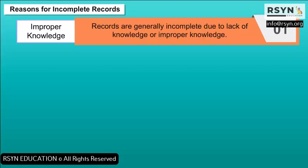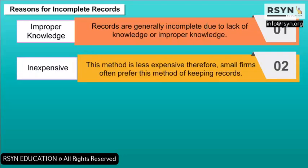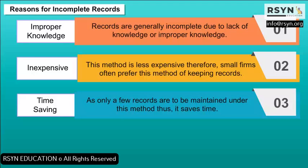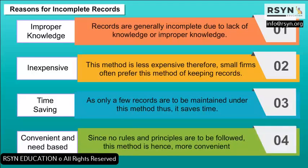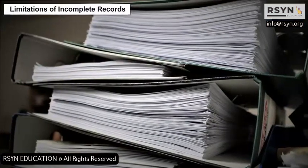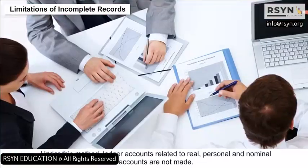Reasons for incomplete records: Improper knowledge — records are generally incomplete due to lack of or improper knowledge. This method is less expensive, therefore small firms often prefer it. Time saving — as only a few records are to be maintained under this method, it saves time. Convenient and need-based — since no rules and principles are to be followed, this method is more convenient, and firms adapt different techniques of recording transactions based on need.